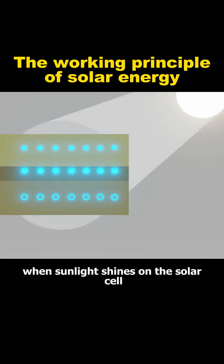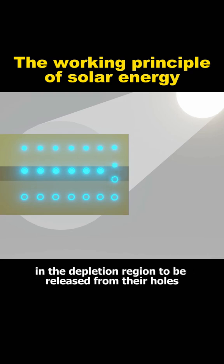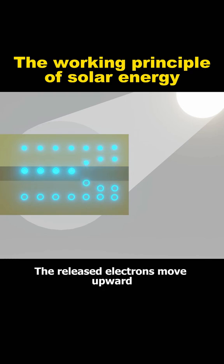Then, when sunlight shines on the solar cell, the light contains photons that trigger electrons in the depletion region to be released from their holes. The released electrons move upward, while the electron holes move downward.